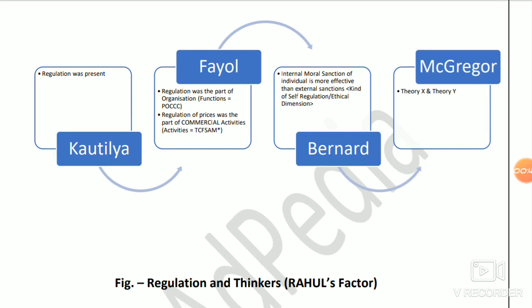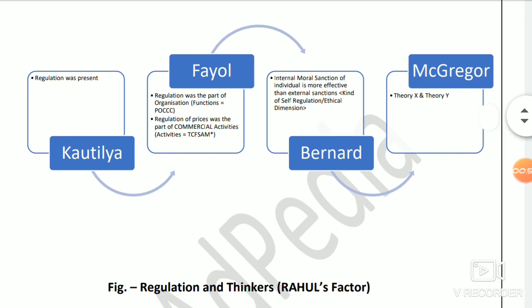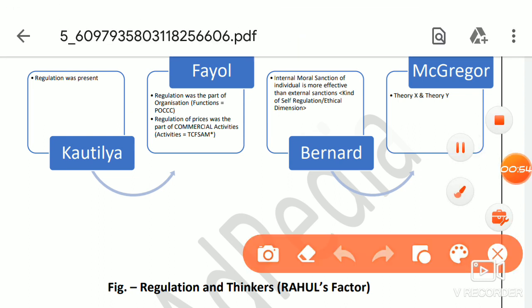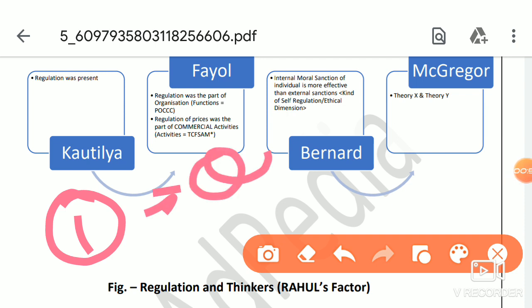Regulation is given in your syllabus. If you read your syllabus properly, you will find that in Public Administration Paper 1 there is a topic called organization, and under organizational behavior you will get regulatory bodies, regulation, public-private partnerships, etc. Similarly, for Public Administration Paper 2 you will find an organizational perspective when it comes to public sector undertakings, union government, state government, and philosophical frameworks. Ultimately, regulation is something you should be aware of.